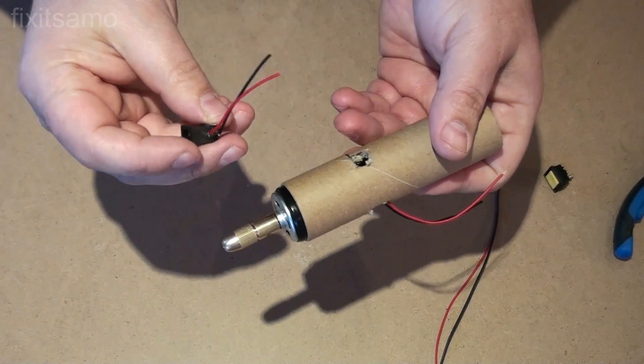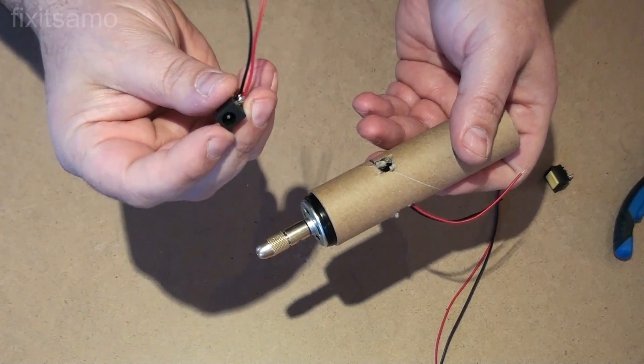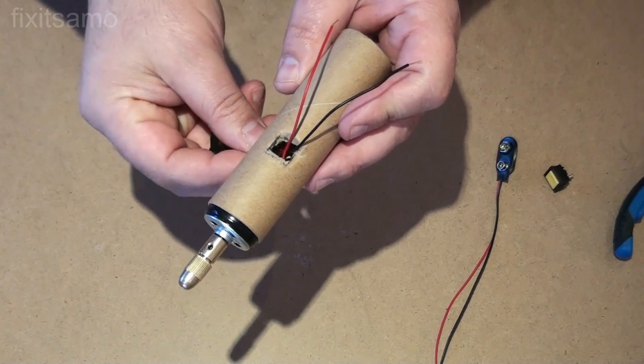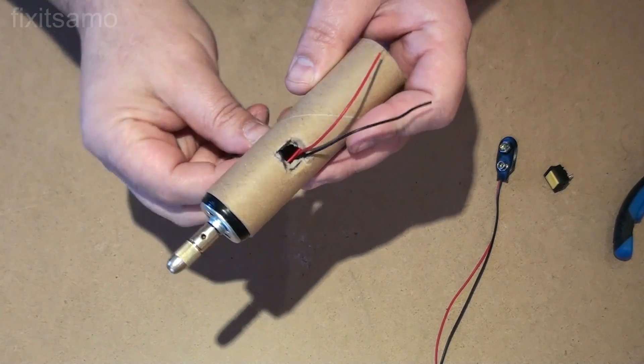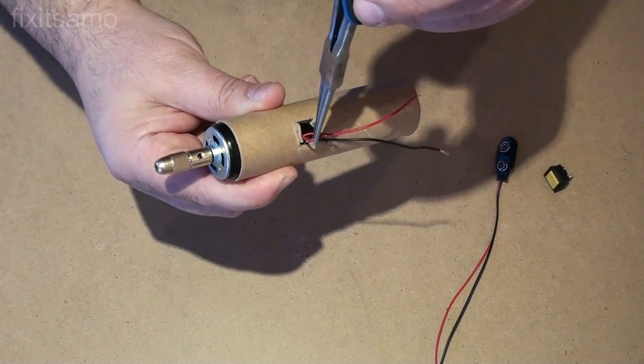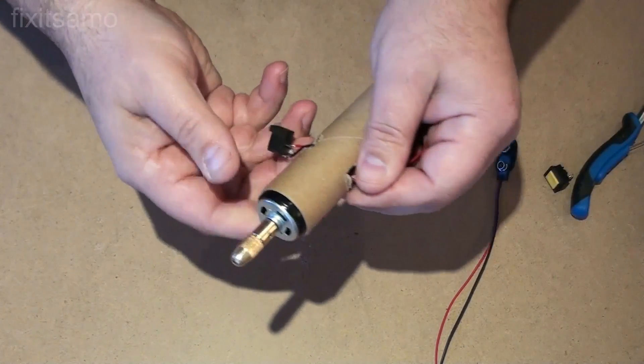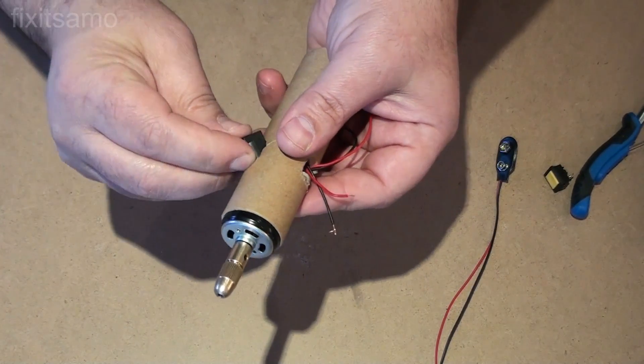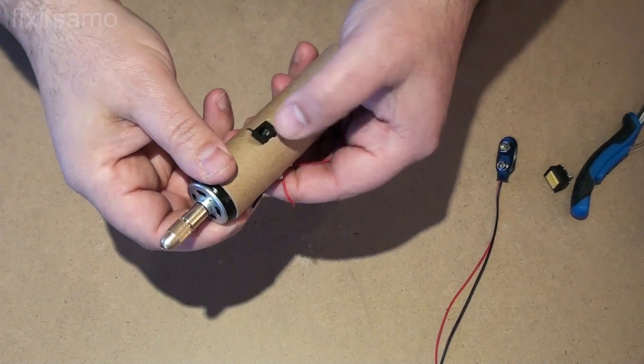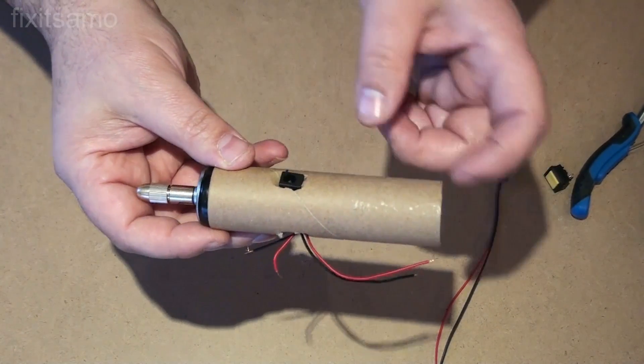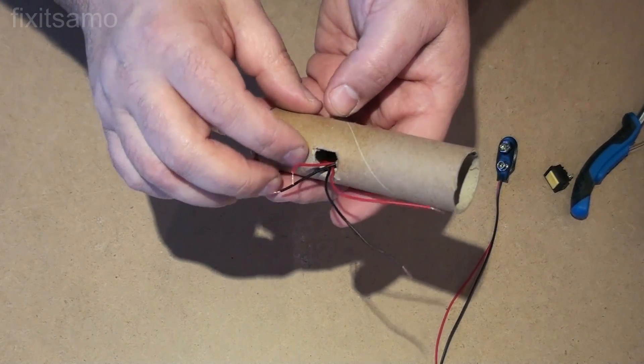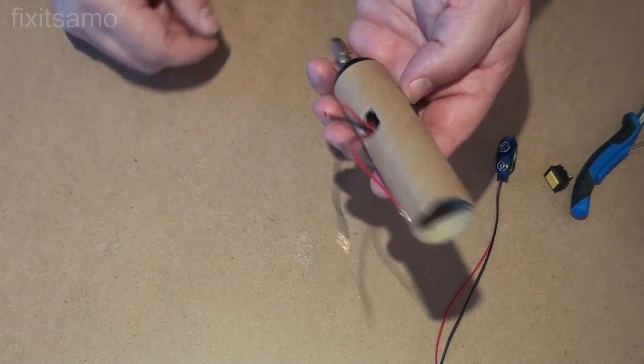Now the next step is our adapter connection. We're going to also put the wires and let them come out from here. There you go. As you see. And now once everything is done, we're going to secure the switch and the electrical connection.